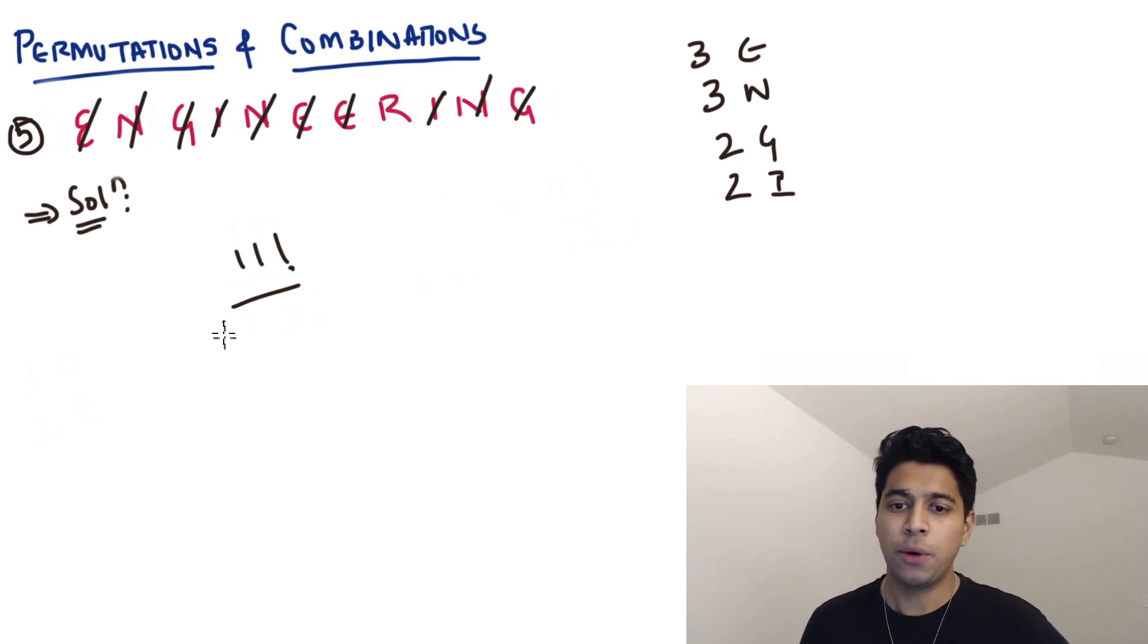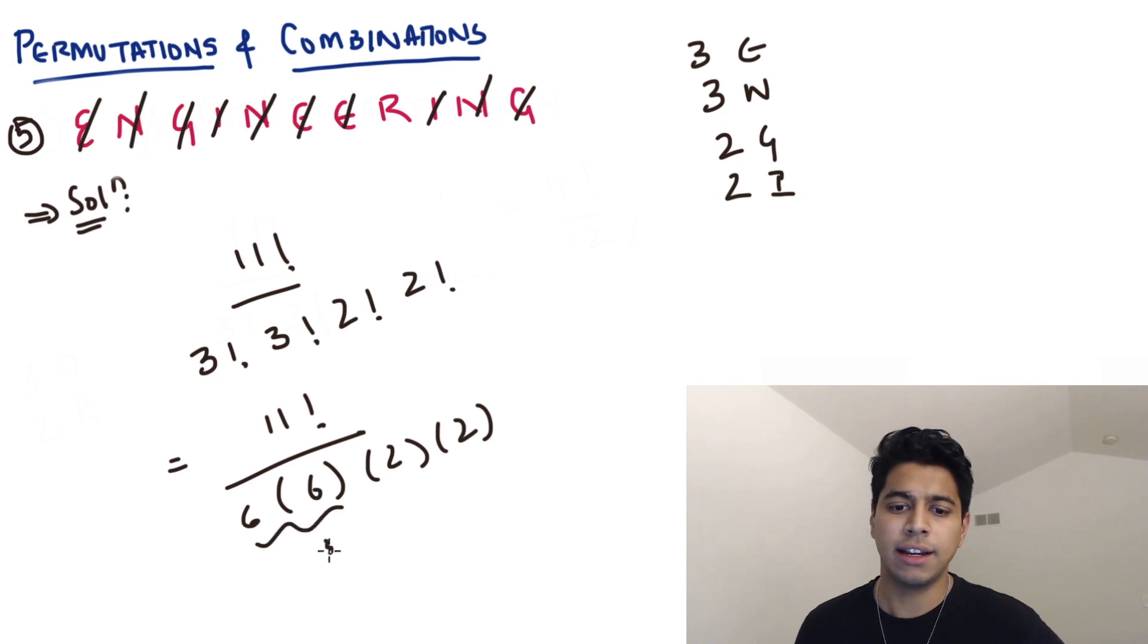So now what you're basically just going to do is you're just going to multiply this on the denominator. So three factorial, three factorial, two factorial, and two factorial. So this is simply 11 factorial and I'm just solving it roughly. So three factorial is six into three factorial is six. This is two and this is two. So six, six are 36, 36 into two is 72, 72 into two is 144. So this is going to be 11 factorial upon 144.